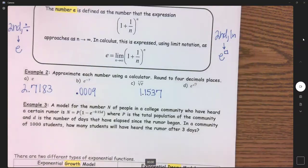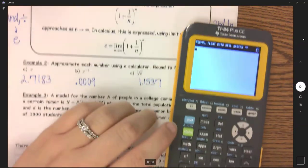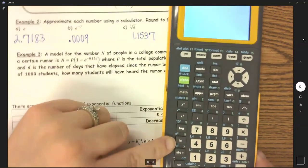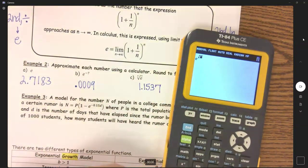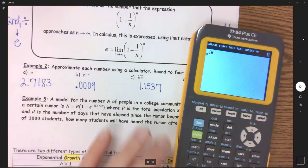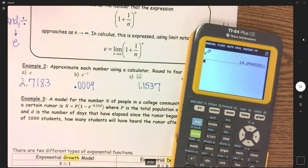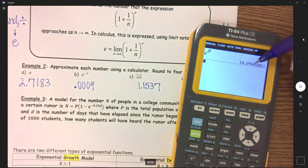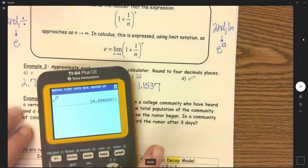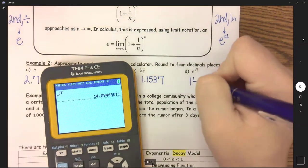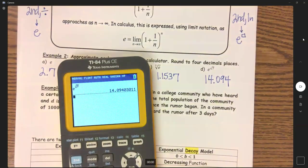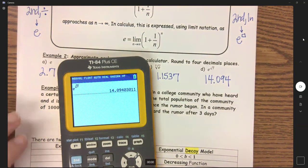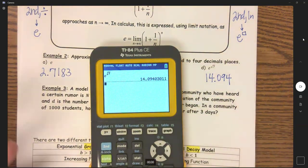And then lastly, e to the square root of seven. So second ln, because I have an exponent here, and then to the square root of seven. So 14.094, that three makes that zero stay. So 14.094. So hopefully that all felt kind of silly. You're going to have some homework questions that simply are, can you evaluate and find e in your calculator?